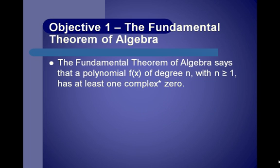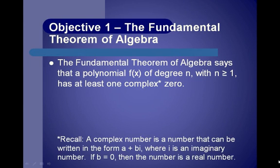This theorem says that a polynomial function of degree n, with n greater than or equal to 1, has at least one complex zero. Remember, a complex number is a number that can be written in the form a plus bi, where i is an imaginary number. If b is equal to zero, then the number is a real number. A complex number can be a real number, an imaginary number, or a number that has both real and imaginary parts.